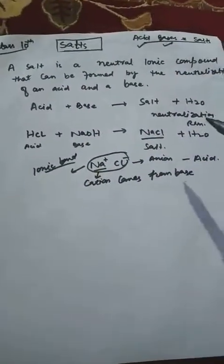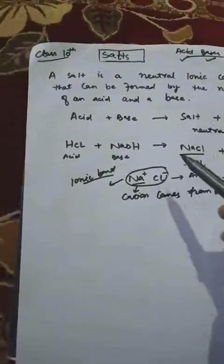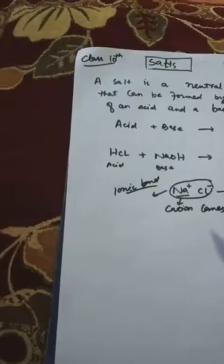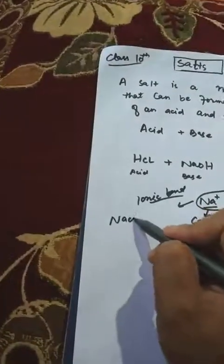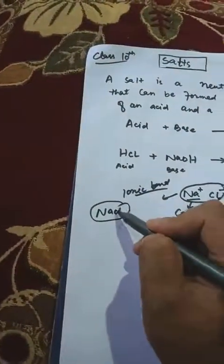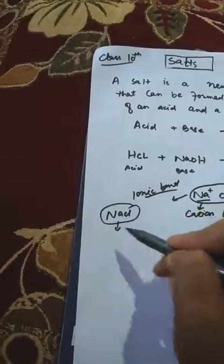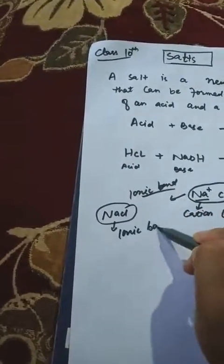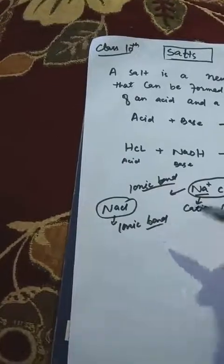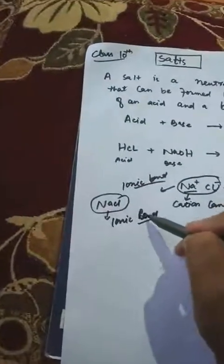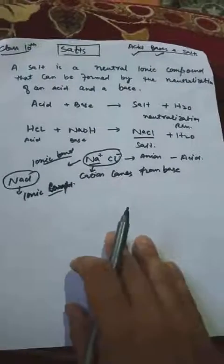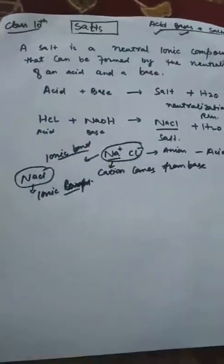Salt is a neutral ionic compound that can be formed by neutralization. It is an ionic compound because an ionic bond is present in it. An ionic compound is that type of compound in which an ionic bond is present — as we have already studied.